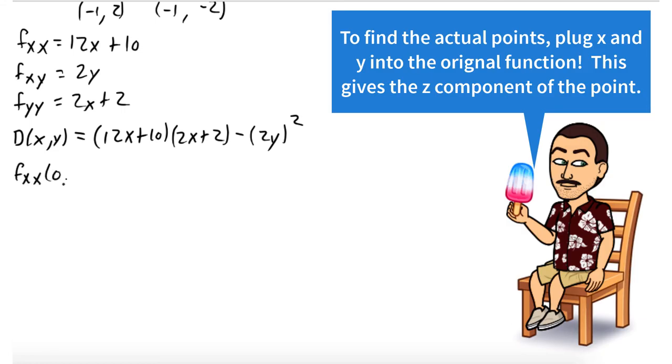So we want to evaluate each of our points at the partial derivative with respect to x twice and check if it's positive or negative. So fxx(0, 0) is positive. And D(0, 0), when we plug it in, it's also positive. So if you have positive and then positive, we have a min.